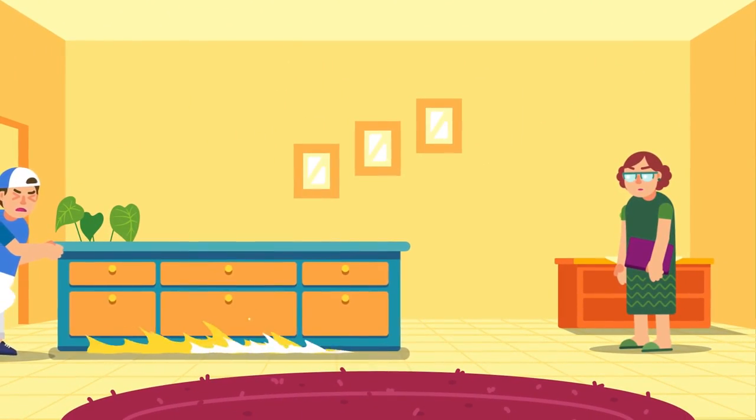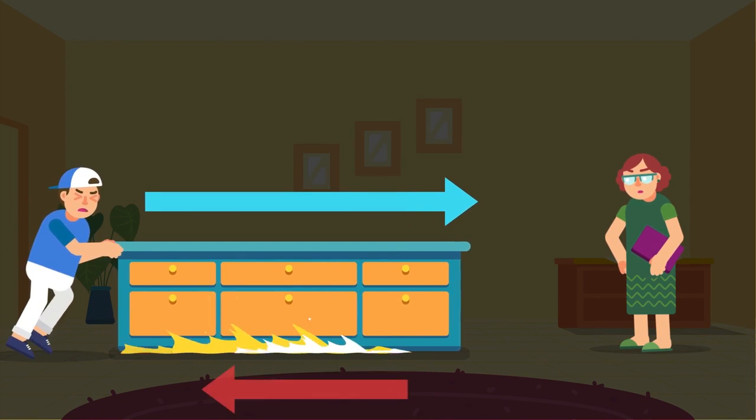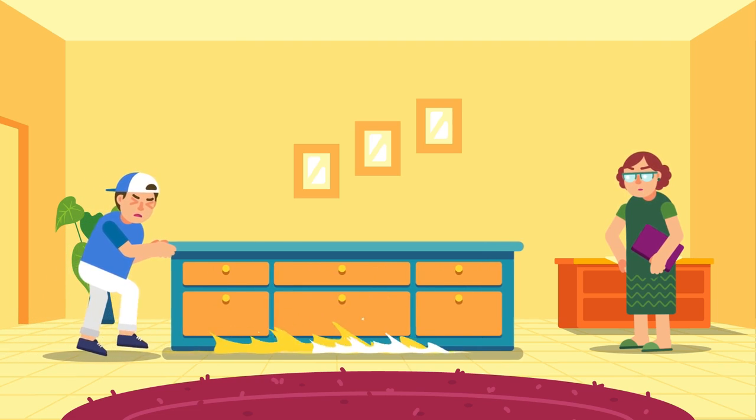For example, if a force is applied to a table to move it across the room towards the right, the friction will be towards the left. If the pushing force is greater than the friction, then the table will move.